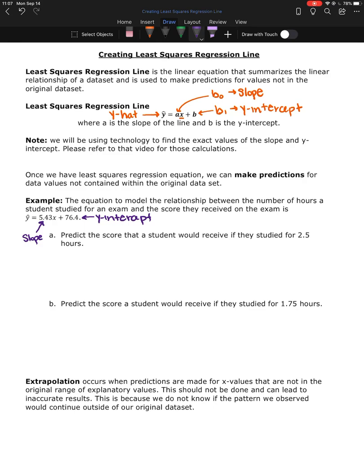So first one, predict the score that a student would receive if they studied for 2.5 hours. So the student is studying for 2.5 hours. So we're going to plug in 2.5 for x. So y hat equals 5.43 times 2.5 plus 76.4 and I don't know what that answer is, I have to actually calculate it real quick. And I got 89.975 or 89.98 depending on how we're rounding that.